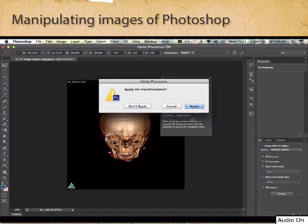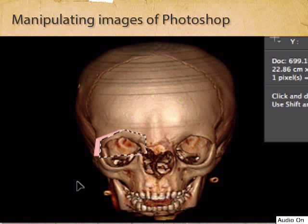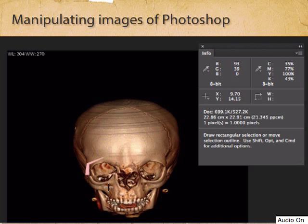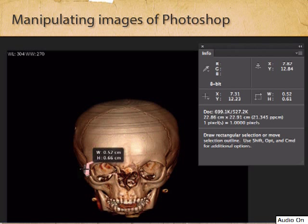This is not exactly what you wanted, but it shows what Photoshop can allow you to do — manipulate the image. This way you can simulate or plan the operation you are going to do and look at what the outcome is going to be. You can once again measure these lengths, and this allows you to think through your operation before you actually do it.